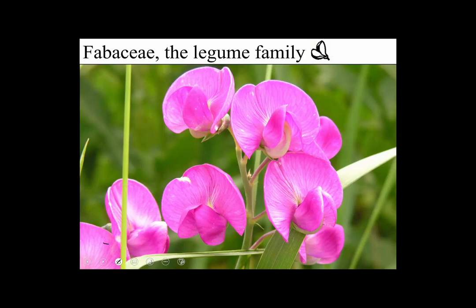I think of the flowers of the fabulous Fabaceae as being kind of like a boat with an insecure mariner. I will explain. The petals in the Fabaceae have names. This one petal at the top that's really prominent is called the banner — sometimes called the standard, but we'll call it the banner. There are two lateral petals called wings. The fact they're called wings kind of detracts from the nautical metaphor, but the banner reminds me of a sail, and the wings kind of remind me of oars. There are two more petals left.